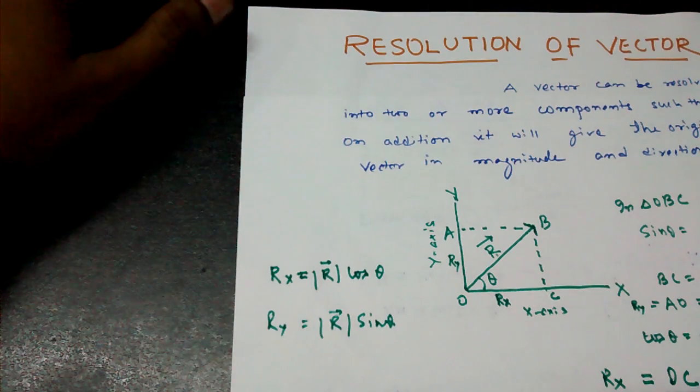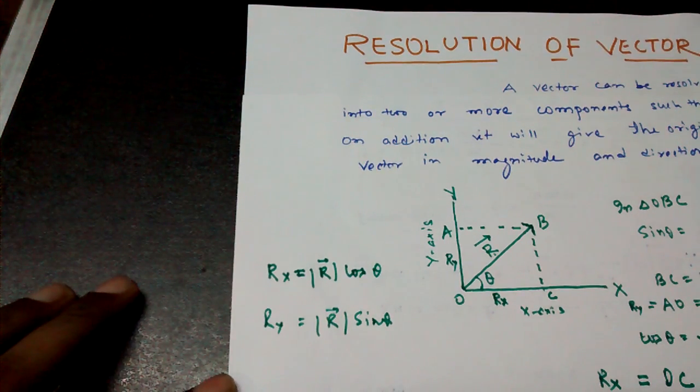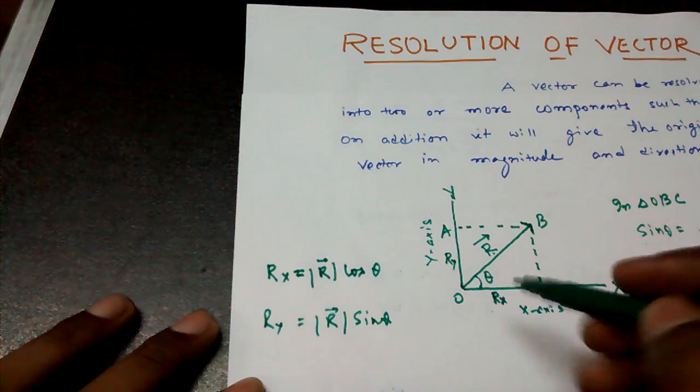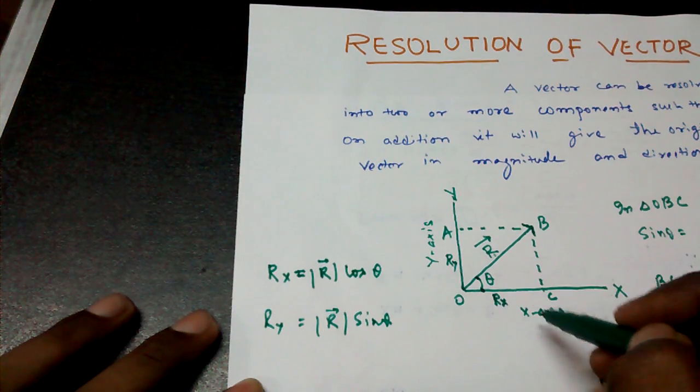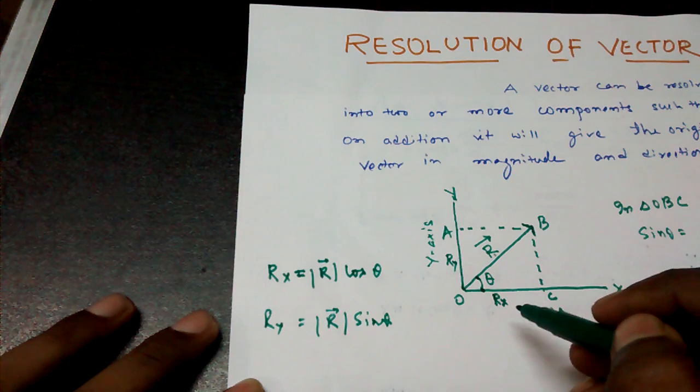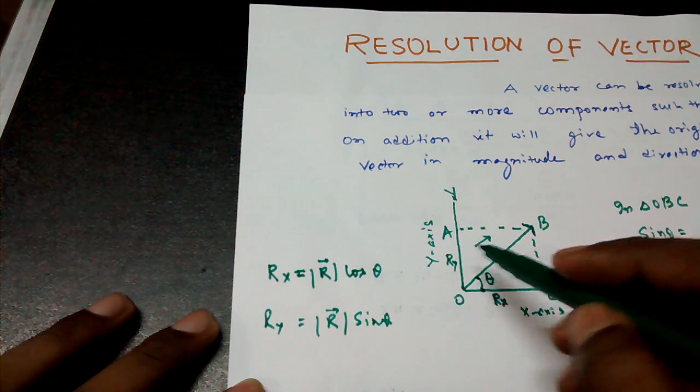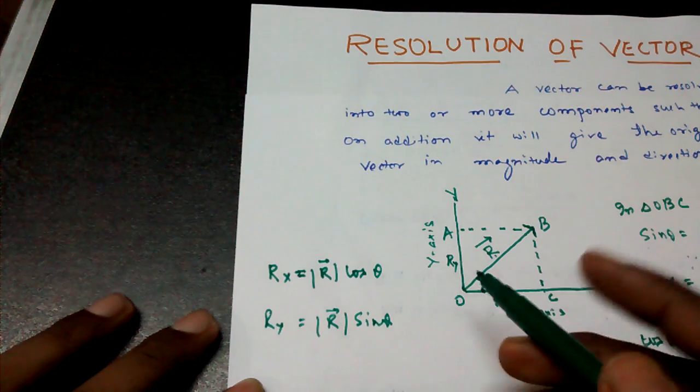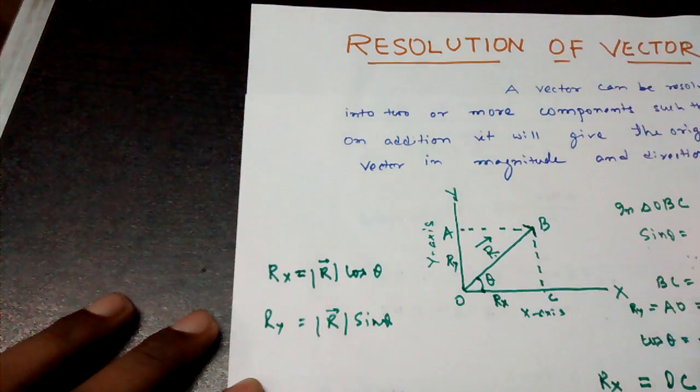This way you can find the resolution of vectors. And remember, the side with which the angle is connected, cos theta should be used over there. And the side with which the angle is not connected, there cos theta will not be used. You remember just one thing cos theta, you will remember the other thing.